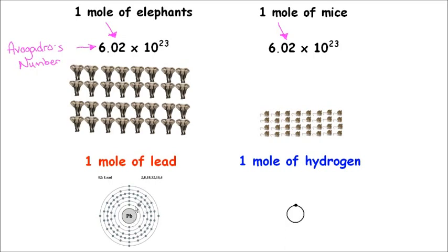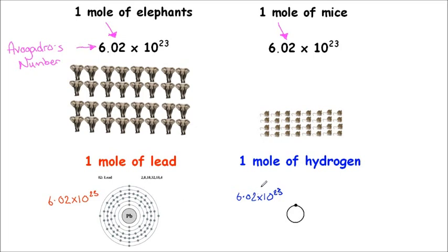One mole of lead contains 6.02×10²³ of those atoms. That's a huge number of these things. But remember, the mole tells you how many of them there are — and that's really important to remember.